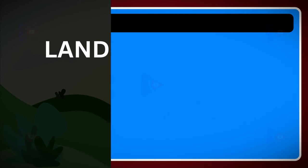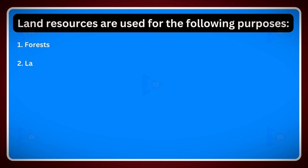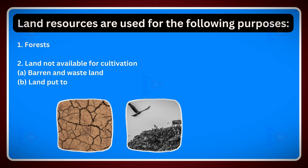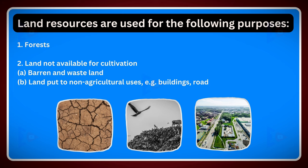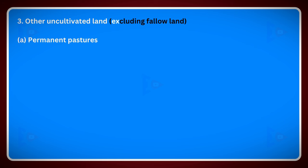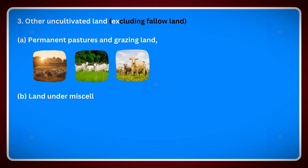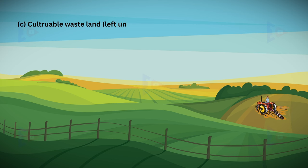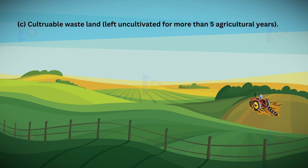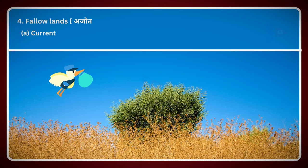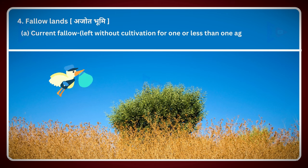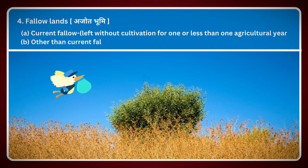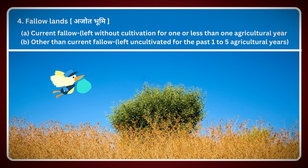Land utilization: land resources are used for the following purposes — forests; land not available for cultivation (barren wasteland and land put to non-agricultural uses like buildings, roads, factories); other uncultivated land including fallow lands, permanent pastures and grazing grounds, land under miscellaneous tree crops, and culturable wasteland left uncultivated for more than five agricultural years; fallow lands including current fallow (uncultivated for one year or less) and other fallow (uncultivated for one to five agricultural years).